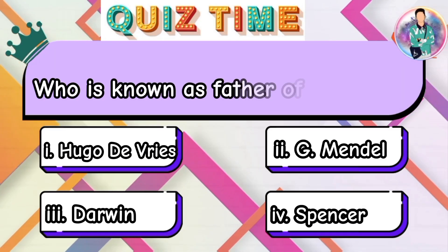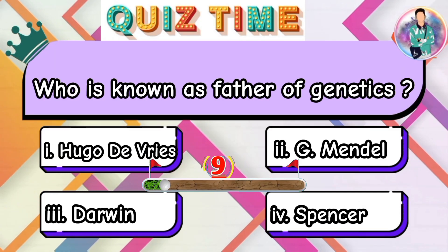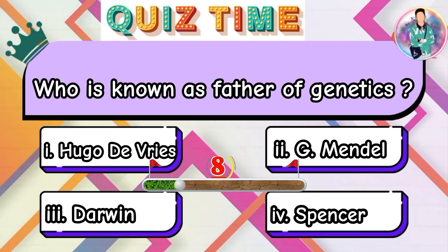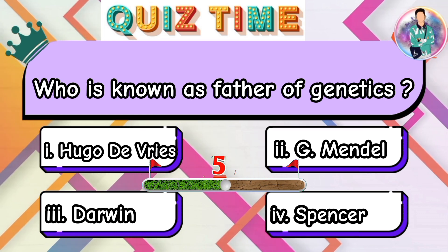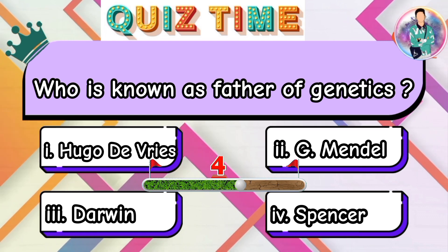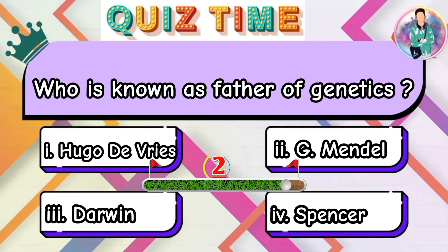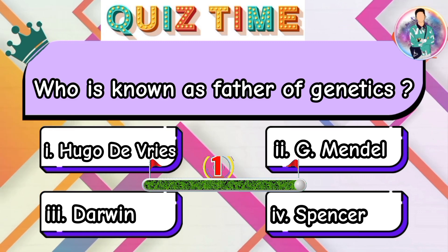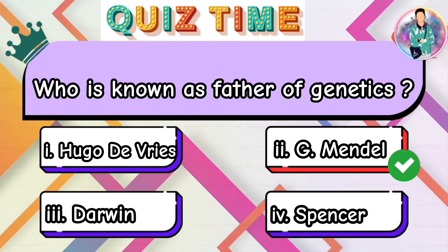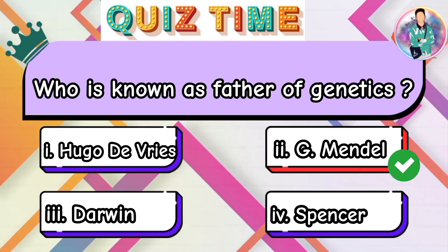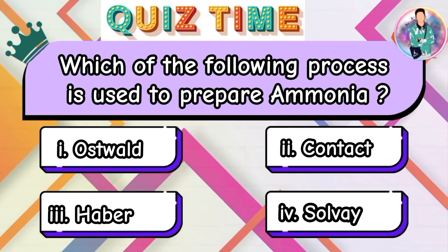Who is known as the father of genetics? Which of the following processes is used to prepare ammonia?